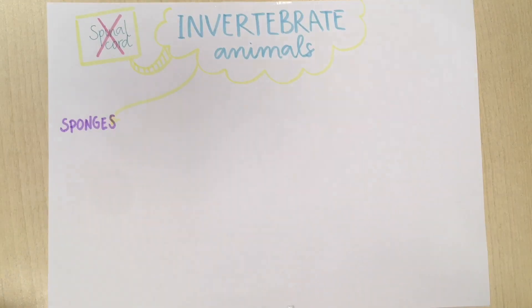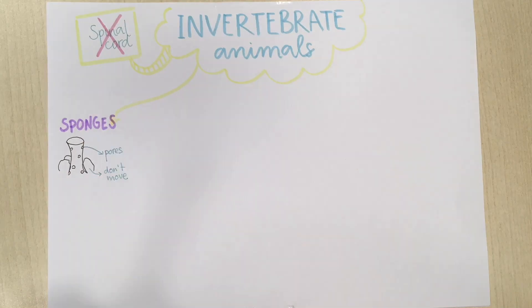The first group is sponges. They are the simplest invertebrates. Their body is like a sack and has small holes called pores. They cannot move about so they are attached to rocks. To eat, they absorb the seawater with the pores and filter the nutrients in it.